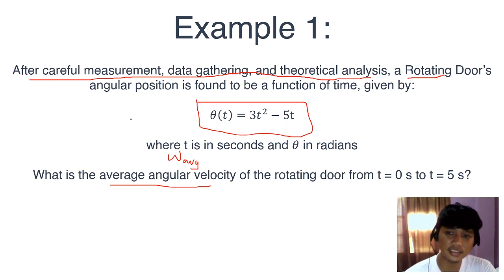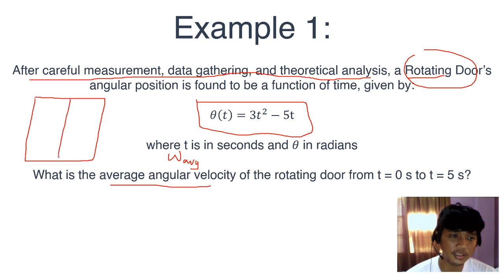The story here is there's this scientist who is very diligent, has no work, lots of time in his hands. So he analyzed this rotating door. Careful measurements - he got a protractor, got a stopwatch, and he observed the door and measured the angular position of the door as a function of time. At t equals 0 seconds, he saw the door at 0 radians, or the positive x-axis. After 1 second, he saw the door at 2 radians. After 2 seconds, negative 2 radians, and so on and so forth.